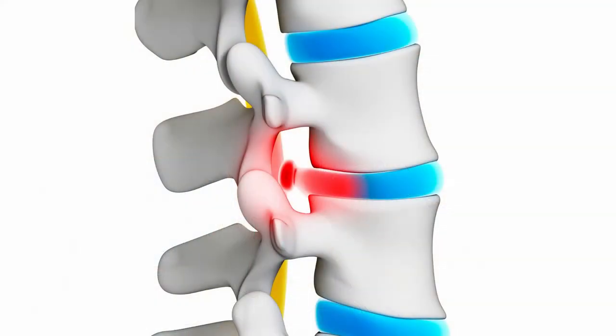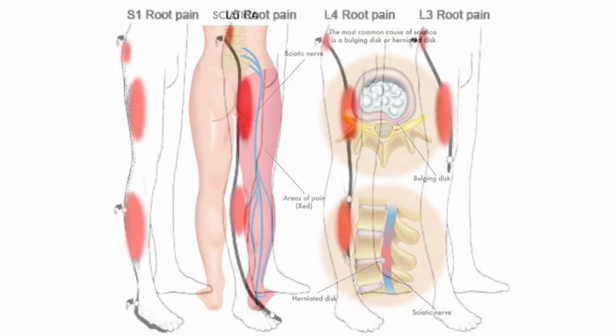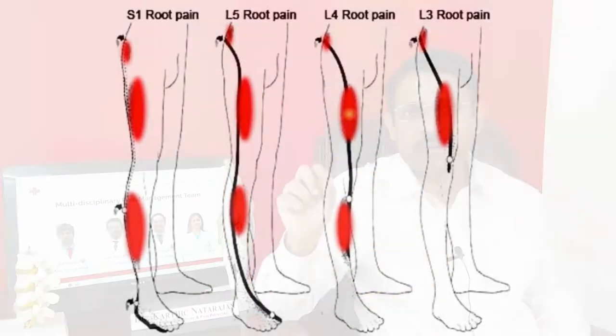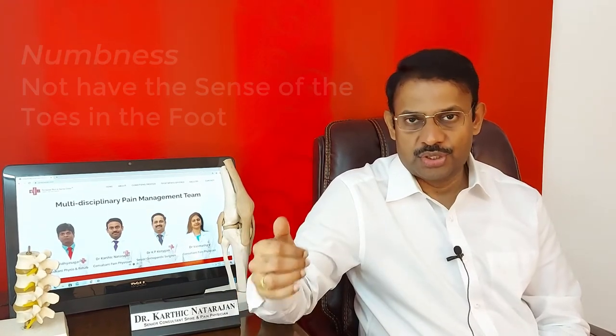In this condition the intervertebral disc, which is a shock absorber between the bones, has got squeezed out. It pinches the nerve that starts from the back and goes to the leg, so back pain may travel to the leg. Patients may also have nerve pulling, pins and needles, and sometimes numbness — they may not have sensation in the toes or foot. All these are symptoms caused by disc herniation.